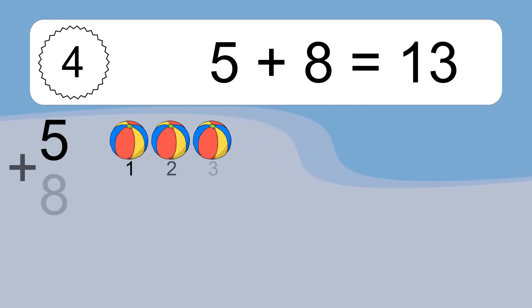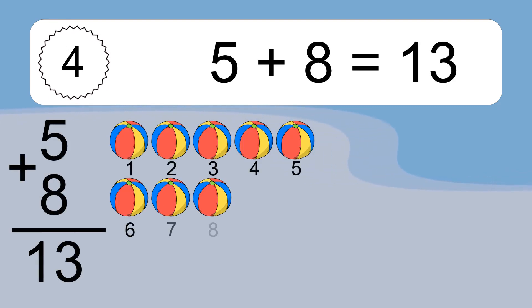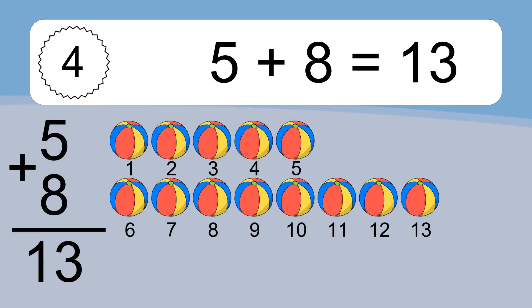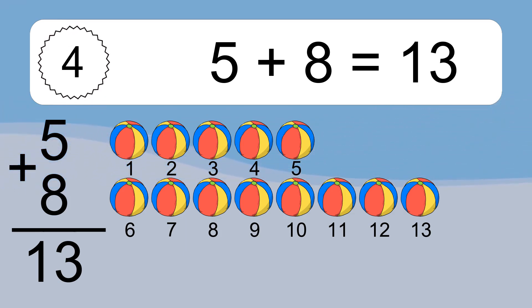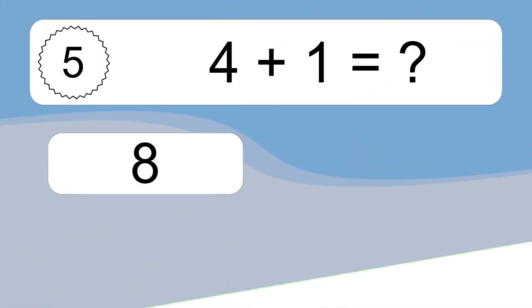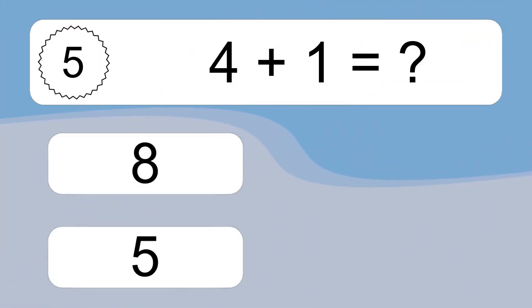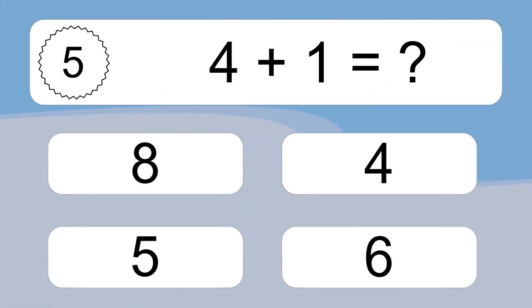5 plus 8 equals what? 5 plus 8 equals 13. Let's count it: 1, 2, 3, 4, 5, 6, 7, 8, 9, 10, 11, 12, 13.